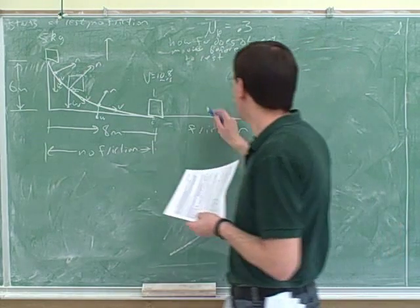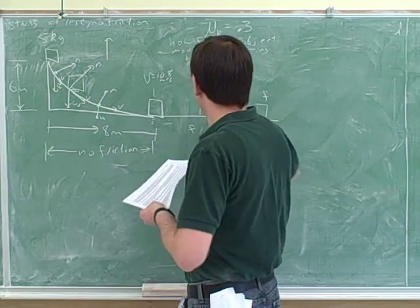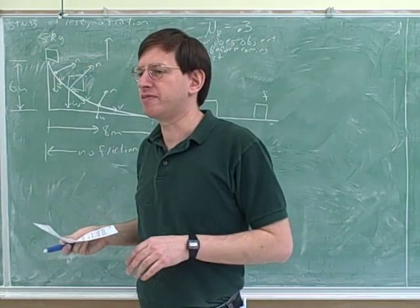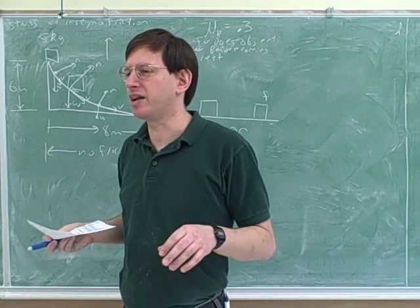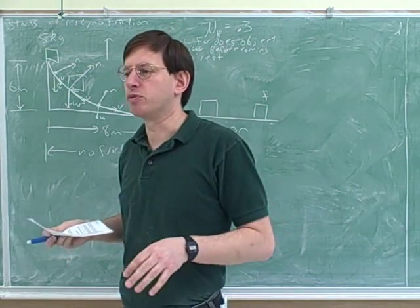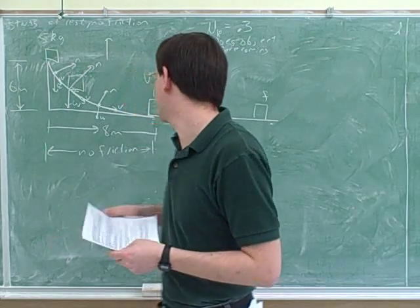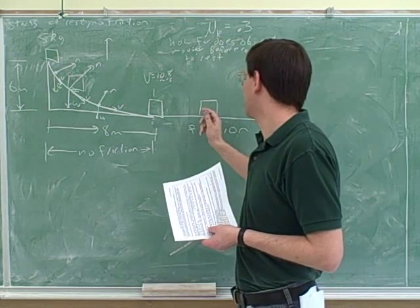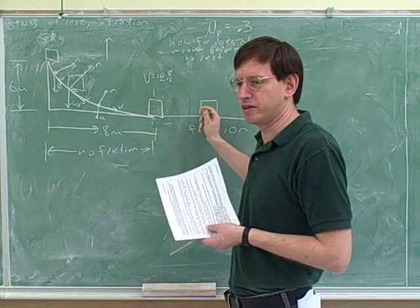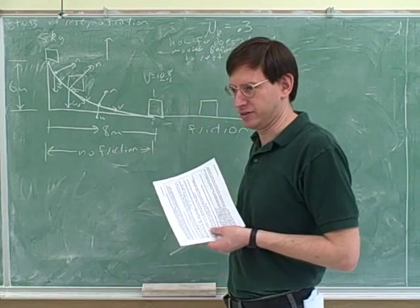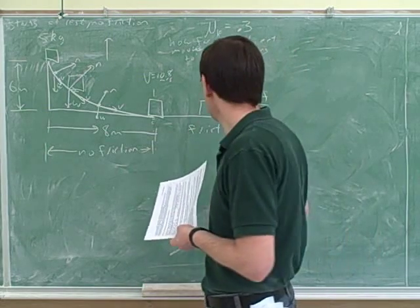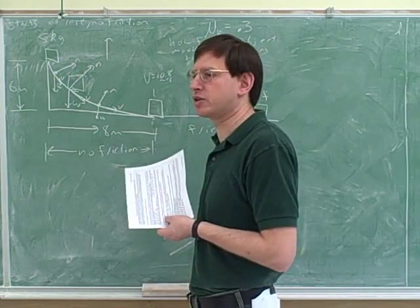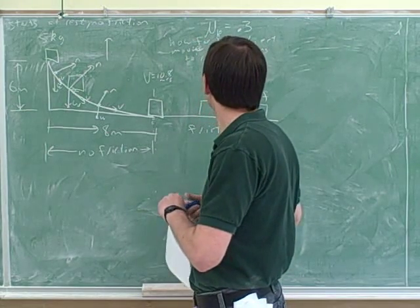Identify the forces. Right, again, notice that when we're working with work, we're focusing on an interval. This is kind of different from Newton's second law. In Newton's second law, we're focusing just at one instant. But for work, we're focusing on an interval. You can see that because there's always an initial and a final point. So maybe it helps to focus on what the object would look like in the middle of the interval. What would be the forces on the object in the middle of this interval? Yeah, that's right. Good, there would be friction because we said there's friction. What direction would that be in? To the left.